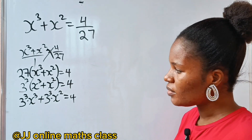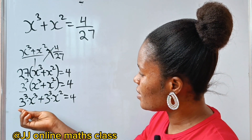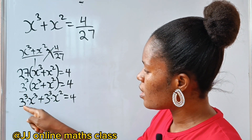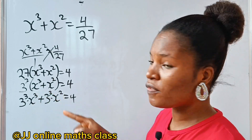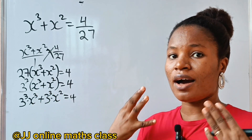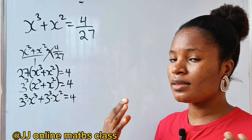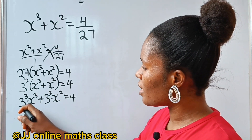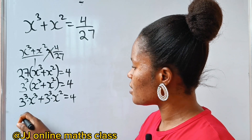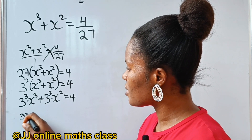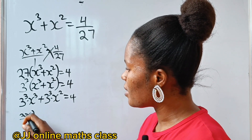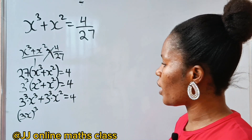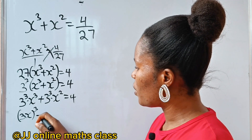Notice that in this term we have 3 to the power of 3 and x to the power of 3 — they share the same index or power. So we can bring them together: 3 times x is 3x, and they share the same power of 3, giving us (3x)³.